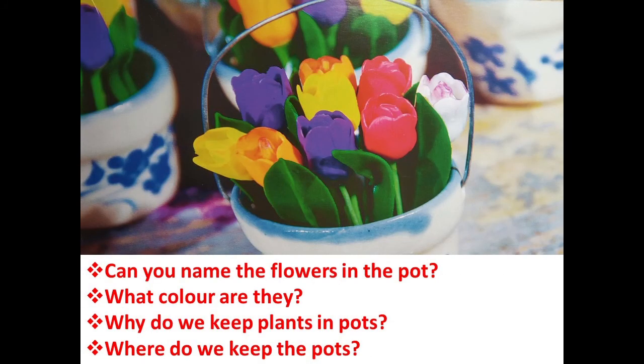Now children, moving to the next page. Look at the picture carefully. First question: can you name the flower in the pot? You can see there are some flowers kept in a pot — name that flower. Next question: what is the color of the flowers that are there in the pot?